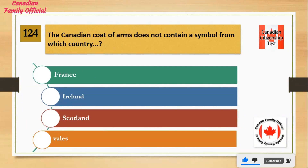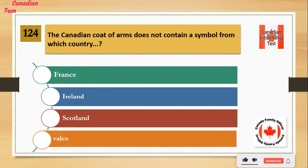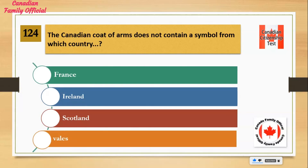The Canadian coat of arms does not contain a symbol from which country? Number 1: France. Number 2: Ireland. Number 3: Scotland. Number 4: Wales. And the answer is Wales.